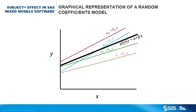The model might be depicted by this graph in which the thick black line represents the predicted model for the population and each thinner line represents the predicted model for each subject — in this case, each patient.